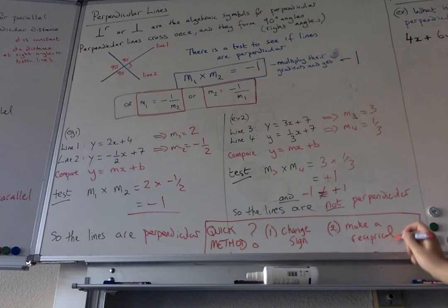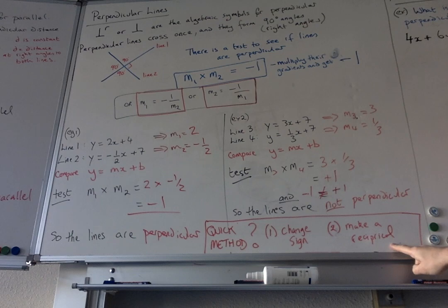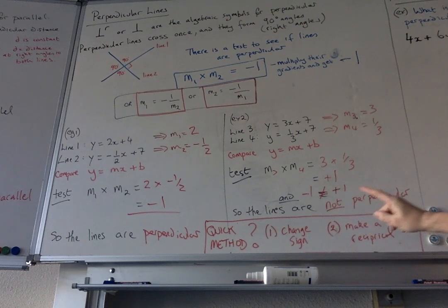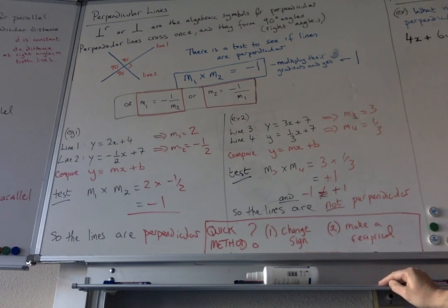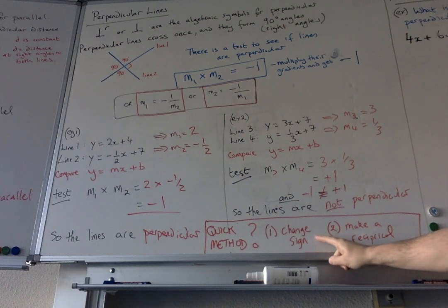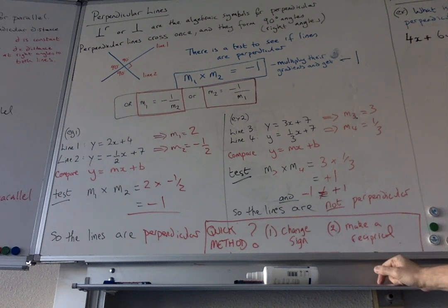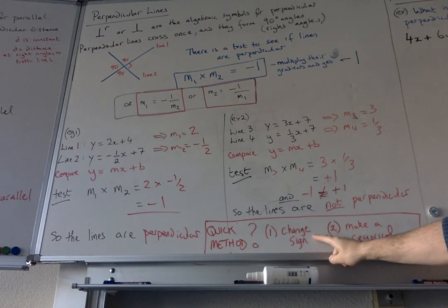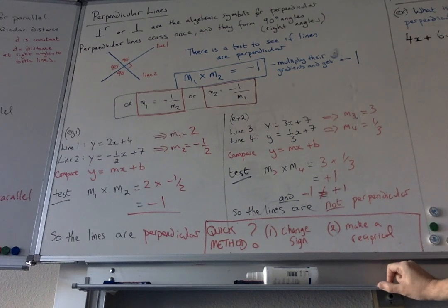So, that's the quick way to work out a perpendicular gradient. This was a third. Change the sign. It's minus a third. Make a reciprocal. It becomes minus 3. 7 thirds. Change the sign. It becomes minus. Make the reciprocal. It's minus 3 sevenths. Minus 8. Change the sign. It's 8. Make a reciprocal. It's 1 eighth.